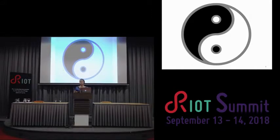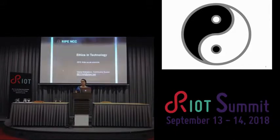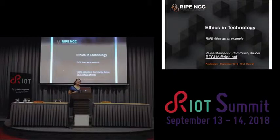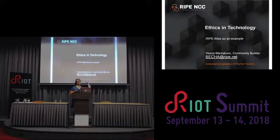So how do we determine what is a good thing and what is a bad thing? And how can we make the good things happen and prevent bad things from happening? I listened to the presentations in the second half of today — they were very technically detailed — and mine is not going to be like that. I'm going to talk about ethics and technology on a very high level, and I'm going to use a concrete example of the existing product called RIPE Atlas, which is kind of an Internet of Things device.